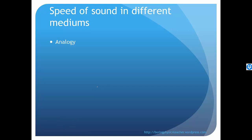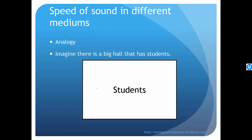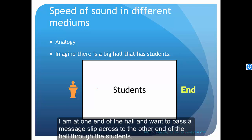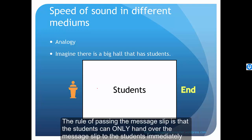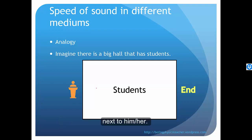I'll now use an analogy to help you understand. Imagine there's a big hall that has students inside. I'm at one end of the hall and want to pass a message slip across to the other end of the hall through the students. The rule of passing the message slip is that the students can only hand over the message slip to the students immediately next to him or her.